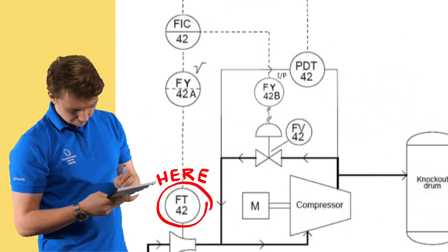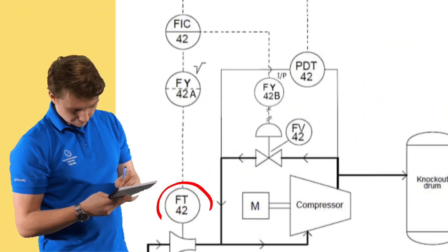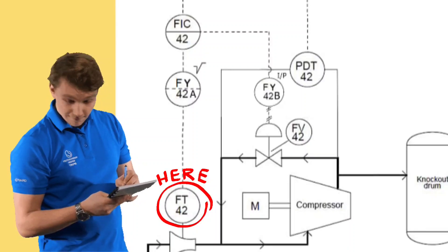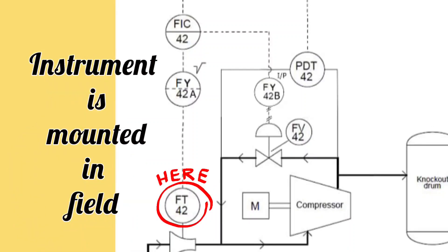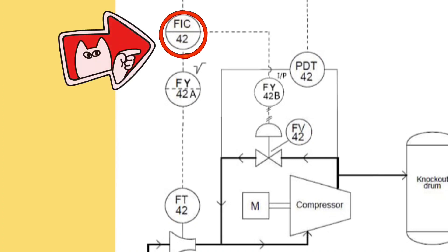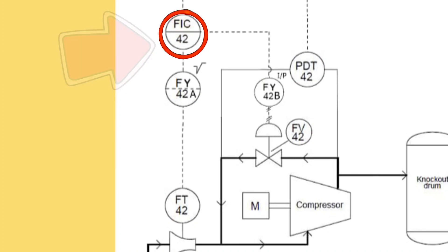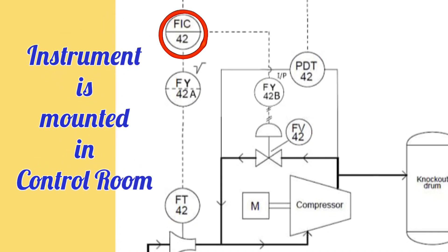Like, if there is no line in between the circle, it means instrument is mounted in the field. If there is solid line in between the circle, it means the instrument is mounted in the control room.